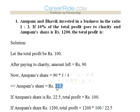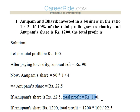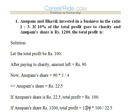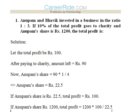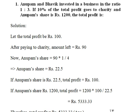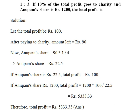Anupam's share is 22.5 and the total profit is 100. So according to the unitary method, if Anupam's share is 1200, then the total profit would be 1200 multiplied by 100 divided by 22.5. So the answer comes to the total profit being rupees 5333.33.